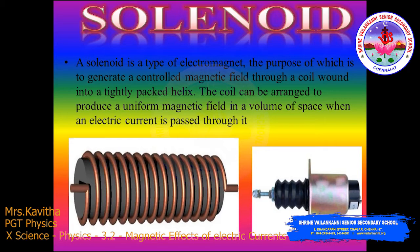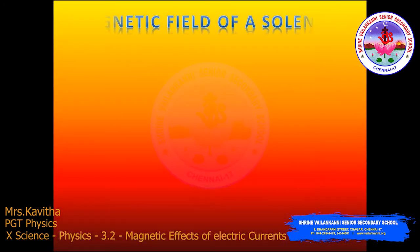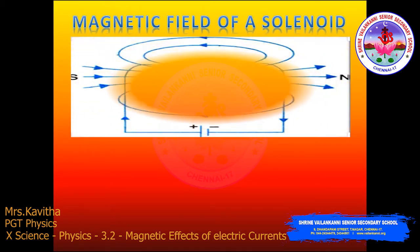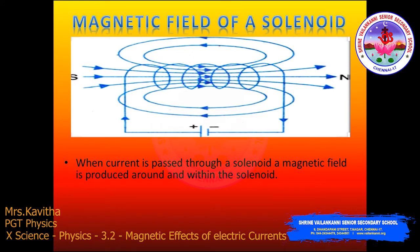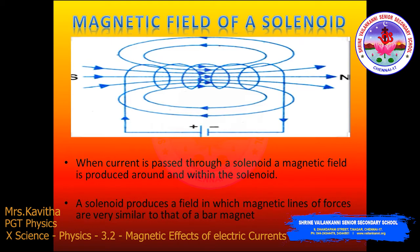The next topic is the magnetic field due to a current in a solenoid. A solenoid can be defined as a long coil of many circular turns of insulated metal wire wrapped closely in the shape of a cylinder, where the length is very large compared to the diameter. When current is passed through such a solenoid, a magnetic field is produced around and within — that means inside — the solenoid as well.